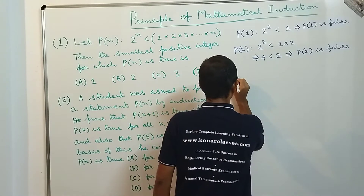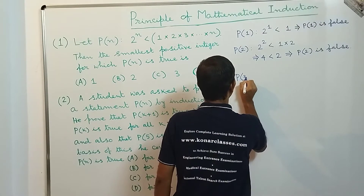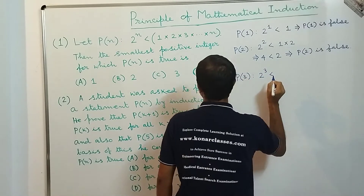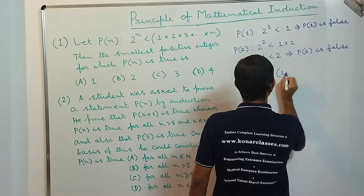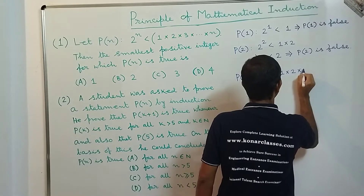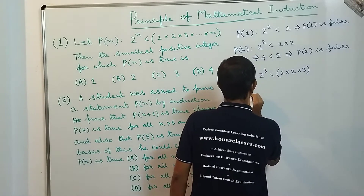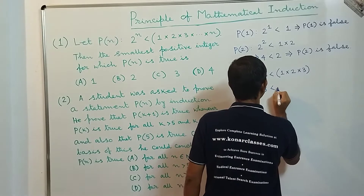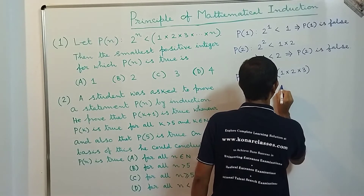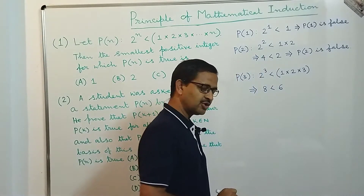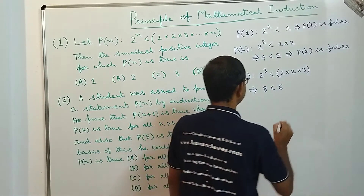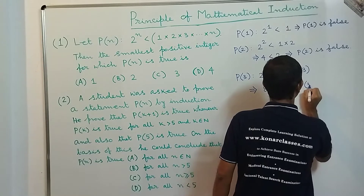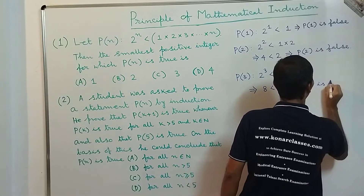Now let's look into P(3). P(3) states that 2^3 < 1·2·3, which implies 8 < 6. That is also not true — 8 is not less than 6. So P(3) is false.